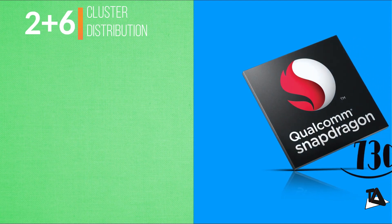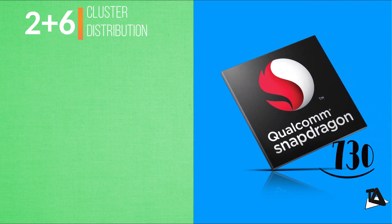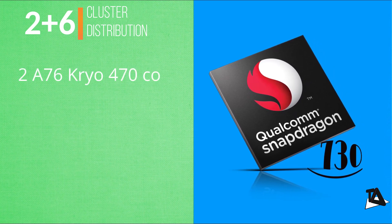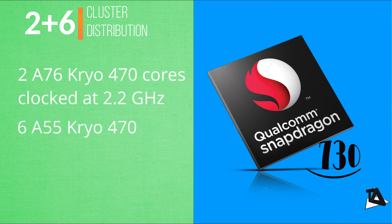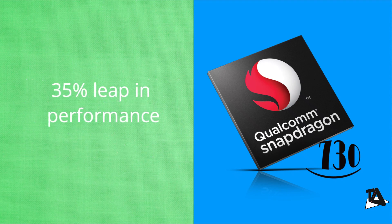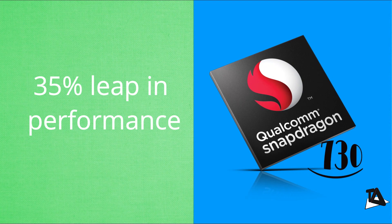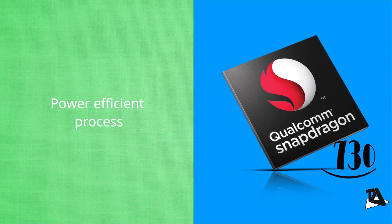Snapdragon 730 has two high-powered and six low-powered cores, but with upgraded Kryo cores and increased clock speeds: two Cortex-A76 Kryo 470 cores at 2.2GHz and six Cortex-A55 Kryo 470 cores at 1.8GHz. This renders a 35% leap in performance, and the smaller process also makes it significantly more power efficient.